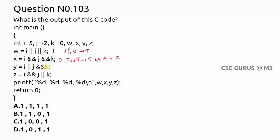For y equals i || j && k: since && has higher priority than ||, evaluate j && k first. j=-2 is true, k=0 is false. True && false = false. Now i || false: i=5 is true. True || false = true. So y = 1.